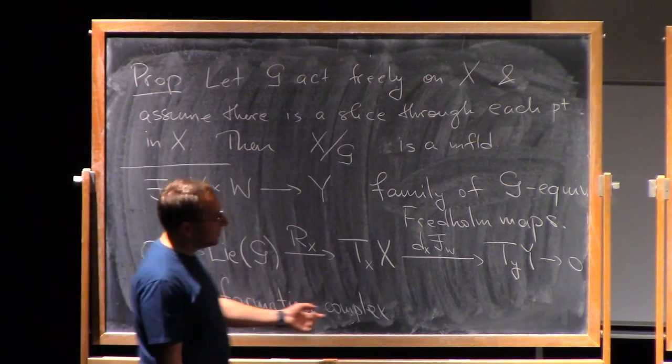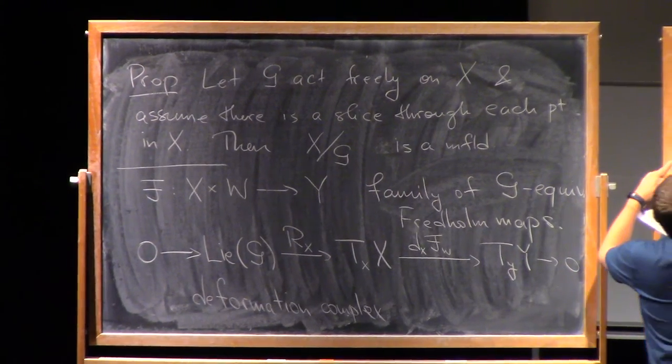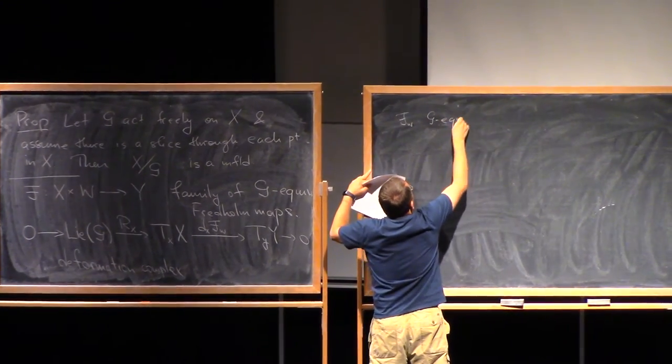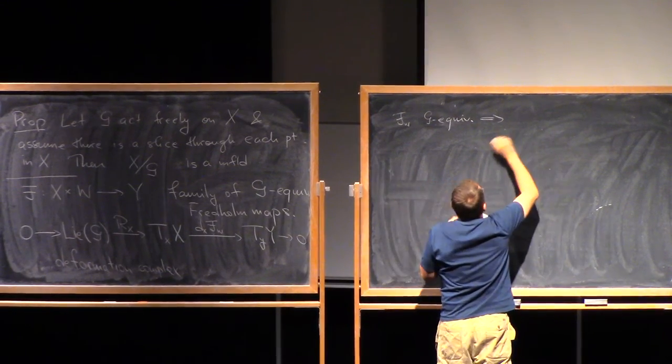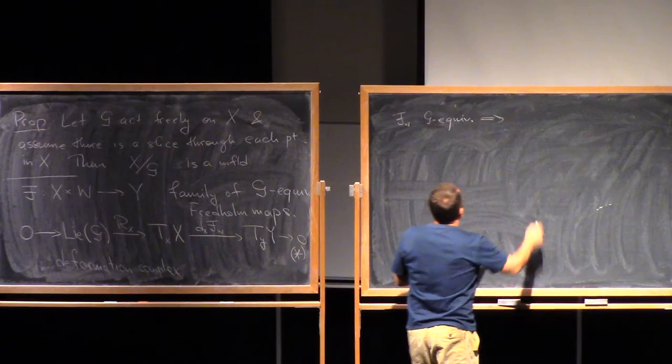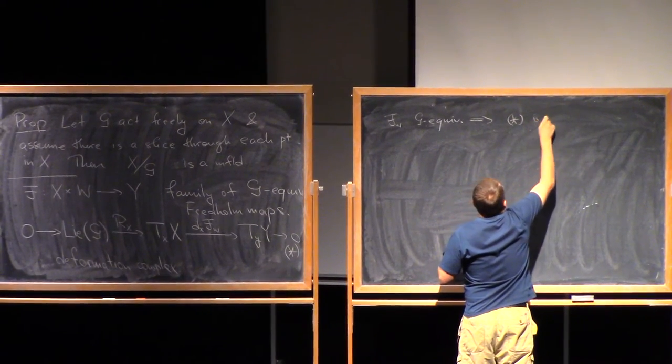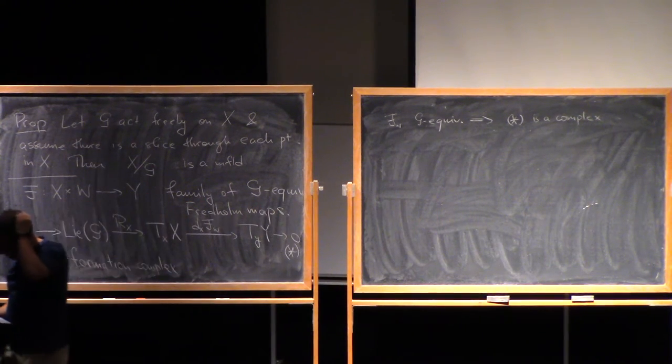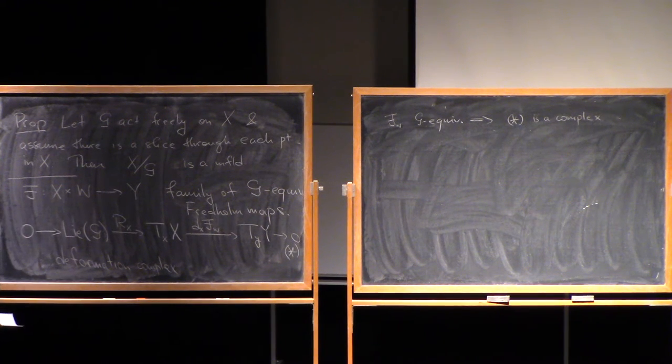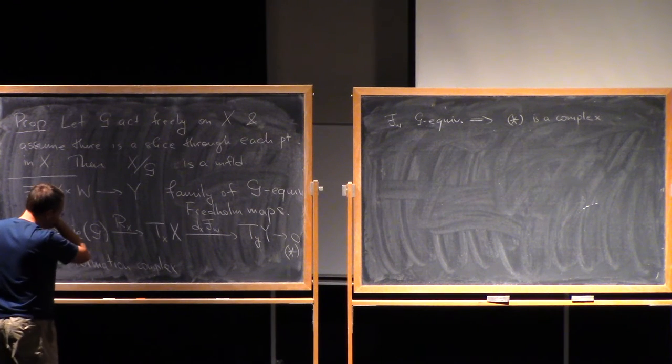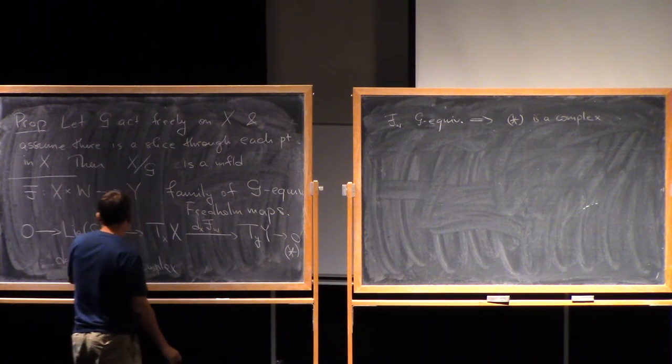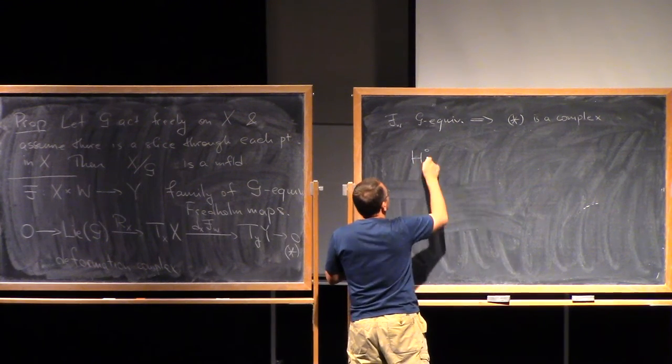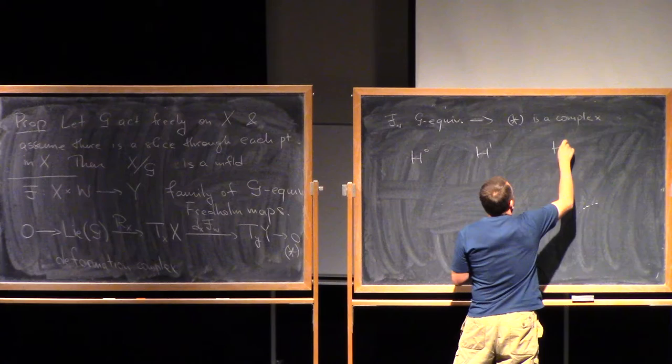And the name complex here is not a random one, so what you can check easily is that if FW is G equivariant, that actually implies that P star is a complex. Now, why is this really an interesting thing to study? So let us consider the cohomology groups of this complex. So what we have is H0, H1, and H2.